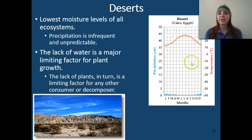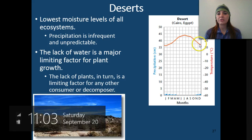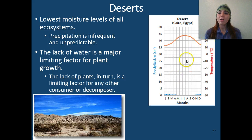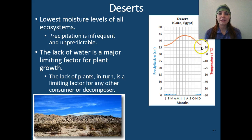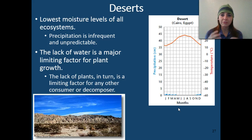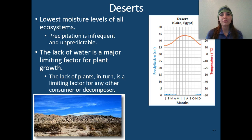Looking at our temperatures — this is in degrees Celsius — in the winter months we have low temperatures almost at freezing level, but not quite, about 10 to 15 degrees Celsius. This is looking at a desert in Cairo, Egypt. Deserts in different places on Earth will obviously receive different amounts of rainfall and have different temperatures, so this is just one of many examples of a desert area.